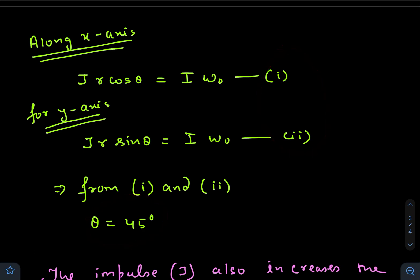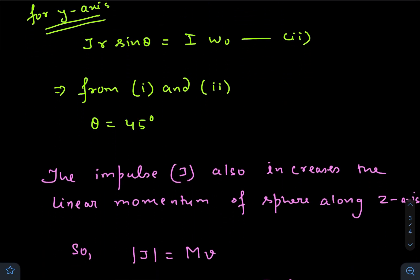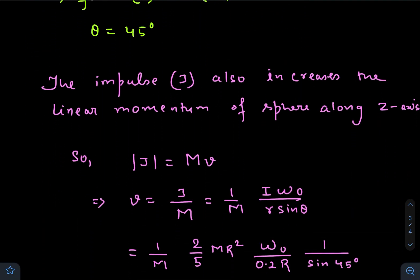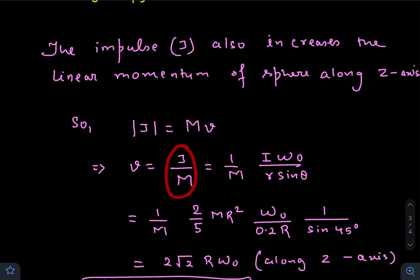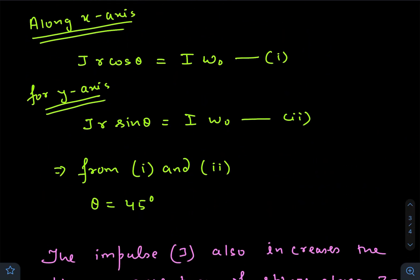Now this impulse also increases the linear momentum of the sphere. So J equals the final linear momentum along z, of course, because J is along the z-axis. Final linear momentum of the solid sphere is M times v, and initial was zero. So v is the velocity of the center of mass, of course. So v is J by M.